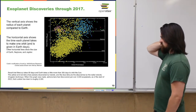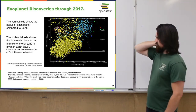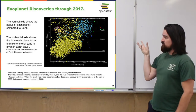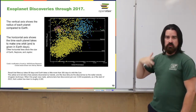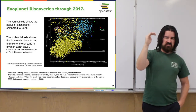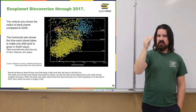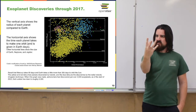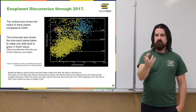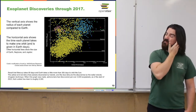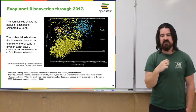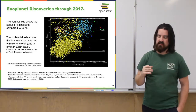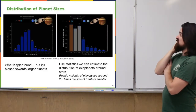Beyond measuring rough size and orbital period, we're even approaching the point where we can detect light that has passed through a planet's atmosphere. If a planet has an atmosphere, as it transits in front of the star some of that starlight passes through the atmosphere and picks up absorption lines from the elements in that atmosphere. So when we look at the spectrum from a planet transiting its star, we can actually start seeing what that atmosphere is made of.